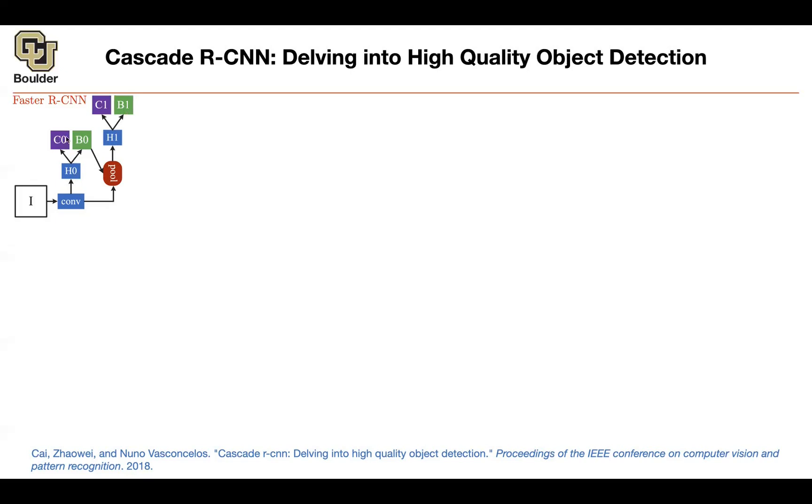And your region proposal network, this C0, is only asking this question, is there an object here or no? We don't care. Is the object a dog? We don't care about the fine-grained details of the objects. You just care about there is an object, yes or no. And these boxes are going to be general purpose.